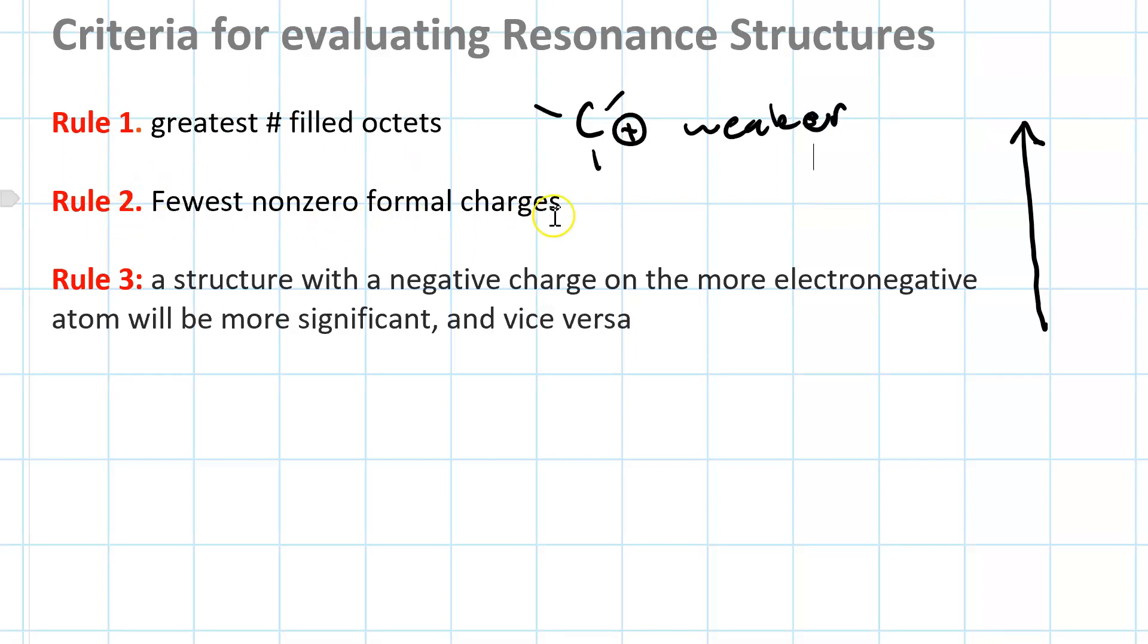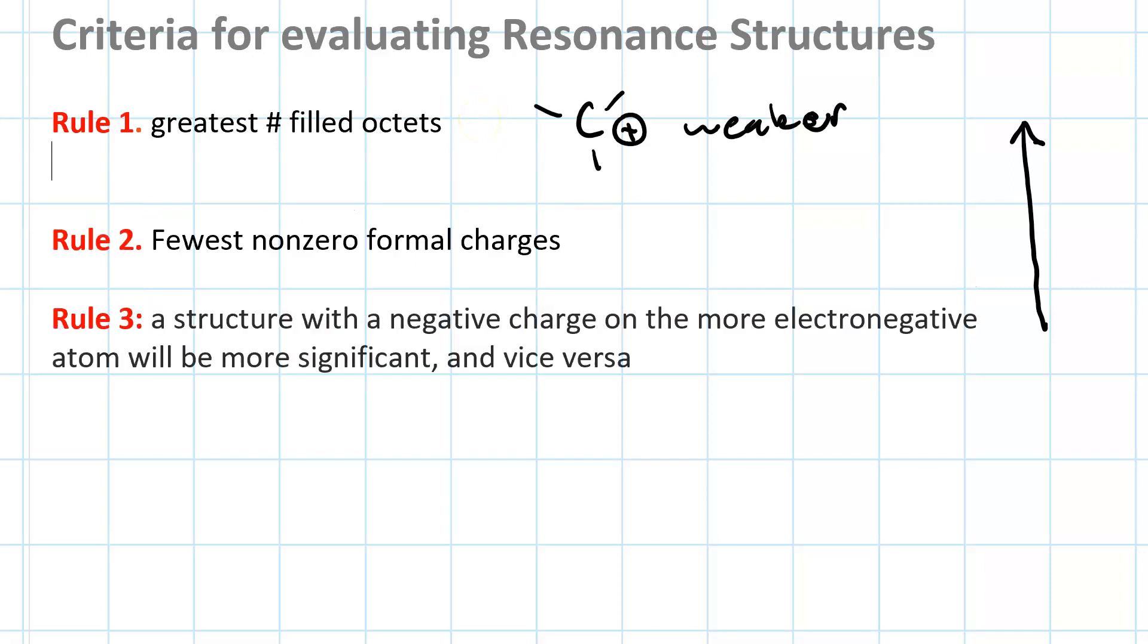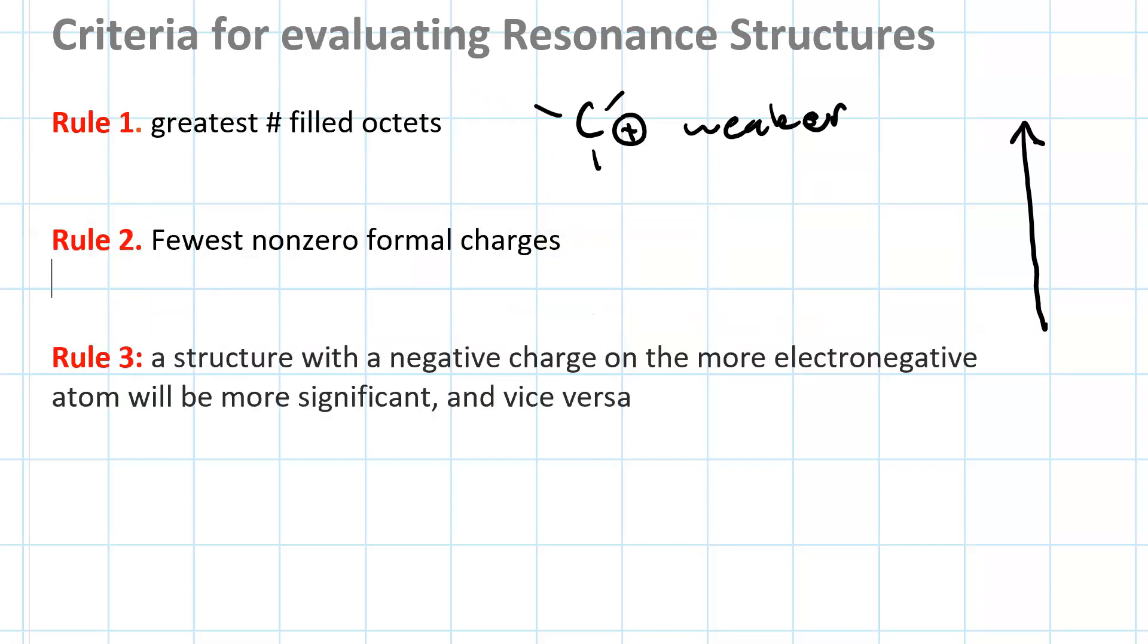Rule number two is to have the fewest non-zero formal charges. So, if you have two resonance structures, one where everything has a formal charge of zero, and another one where you have a plus one and a minus one, the one where everything is neutral is better.